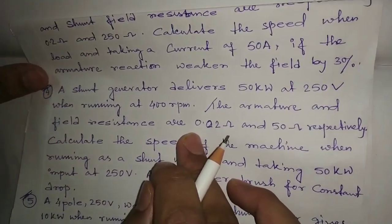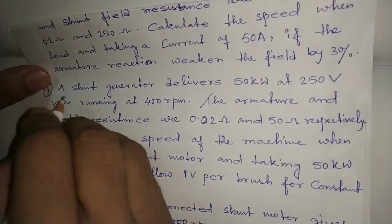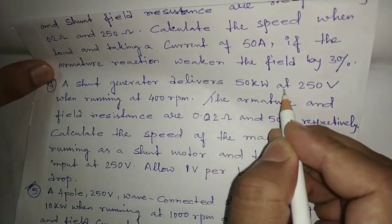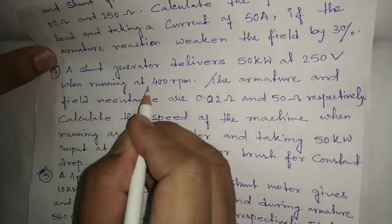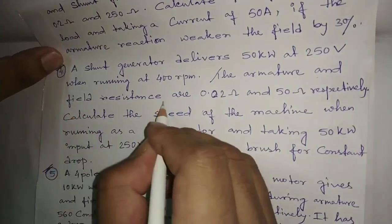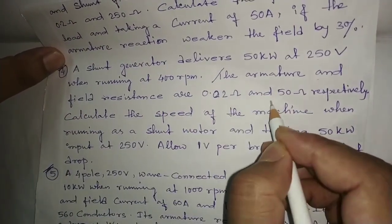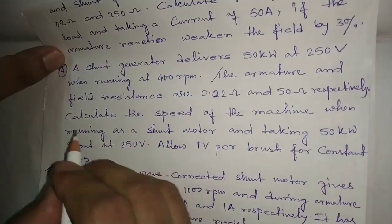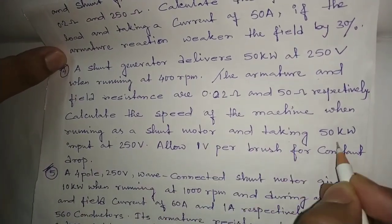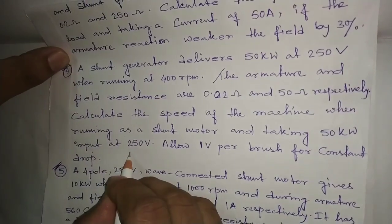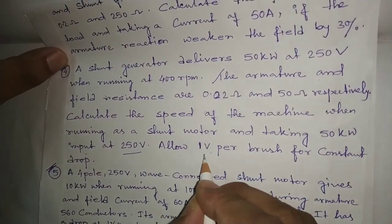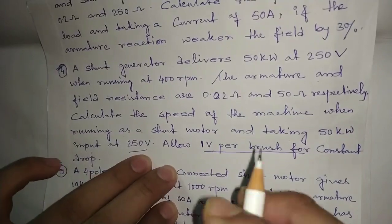Let us solve another numerical problem on the DC machine. A shunt generator delivers 50 kilowatt at 250 volt when running at 400 rpm. The armature and field resistance are 0.02 ohm and 50 ohm respectively. Calculate the speed of the machine when running as a shunt motor and taking 50 kilowatt input at 250 volt. Allow 1 volt per brush for constant drop.